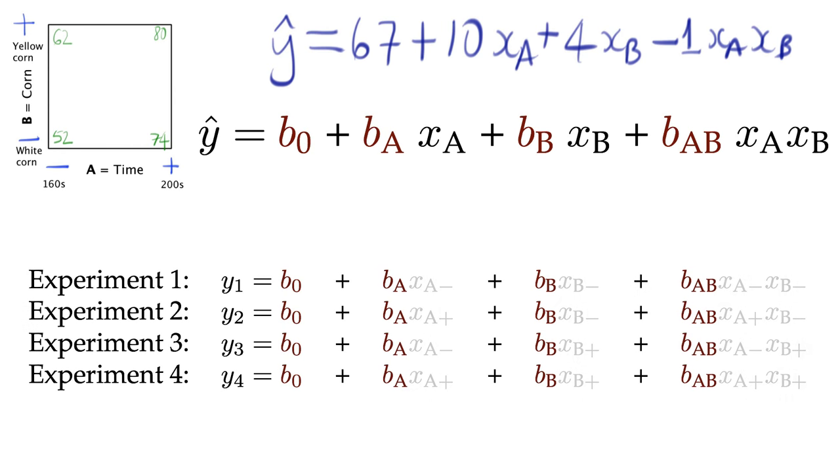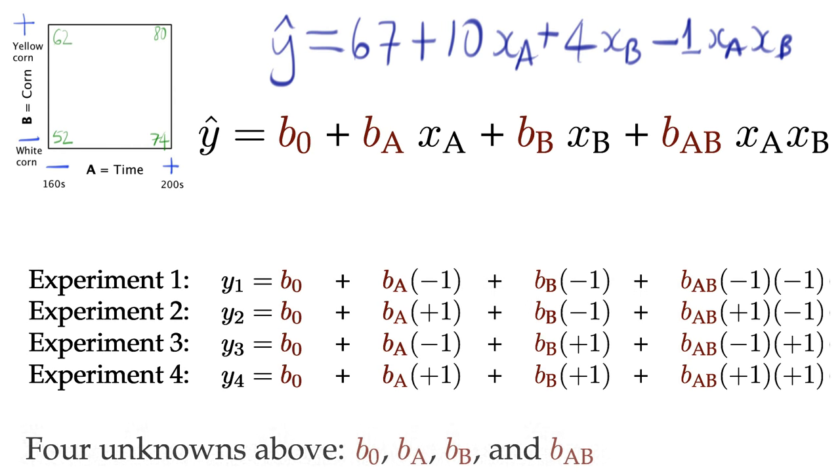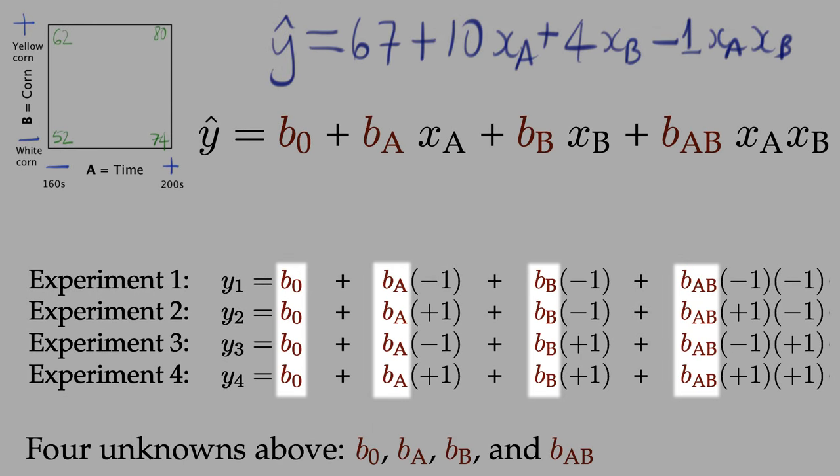Now let's go substitute in minus 1 or plus 1 for the factors a and b, and we will get four equations. Notice that the four equations have four unknown parameters: b0, bA, bB, and bAB.